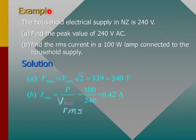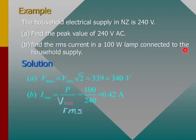This example states that the household electrical supply in New Zealand is 240 volts RMS. You have to find the peak value from this RMS value, and then find the RMS current in a 100 watt lamp connected to this household supply. For question A, you rearrange the original formula and get that answer. For RMS current, you divide the power — which is 100 watts — by the RMS voltage to get the answer.